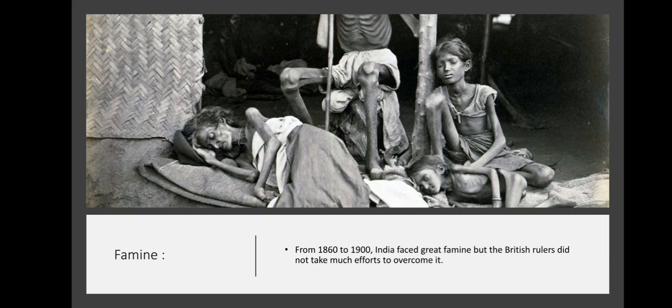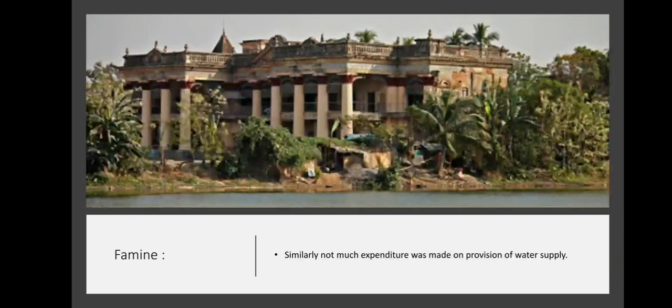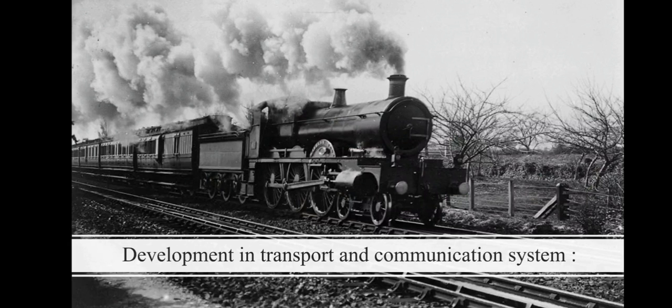Famine. From 1860 to 1900, India faced great famine, but the British rulers did not take much effort to overcome it. Similarly, not much expenditure was made on provision of water supply.